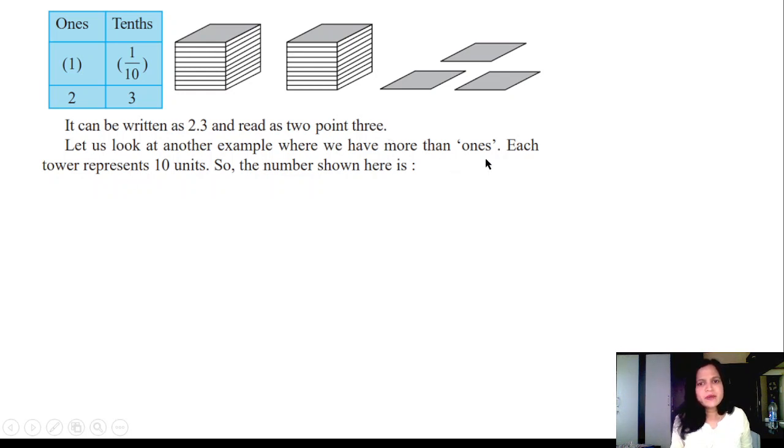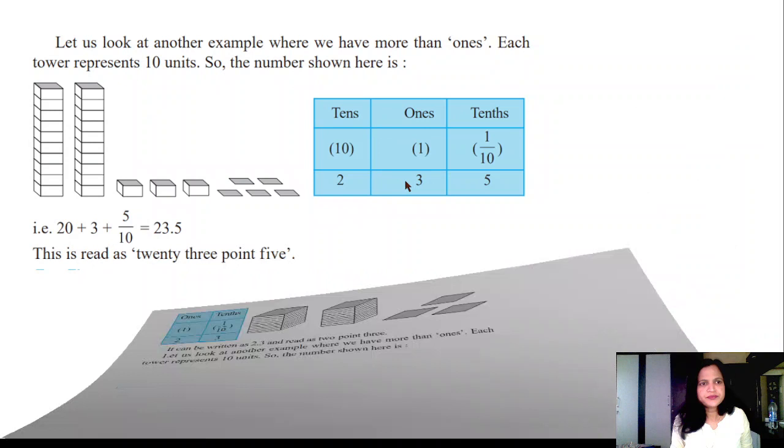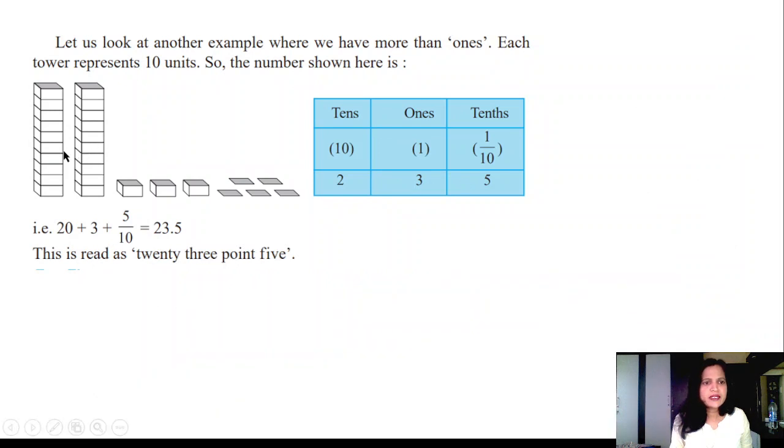Let us look at another example. We will see more about the ones place. Towers represent the tenths. So the number shown here - see, 2 tens are there, tens blocks 2 are there. And these are units 3. And this 1 unit is divided into 10 equal parts and 1 part is taken here. This is 5 tenths, that is 5 by 10.